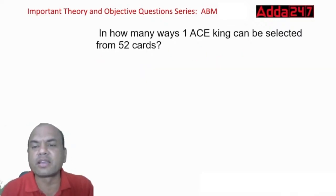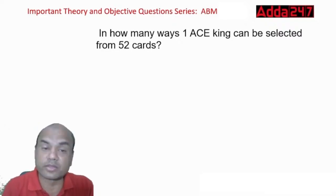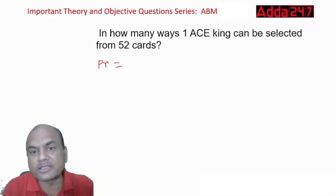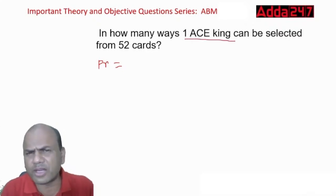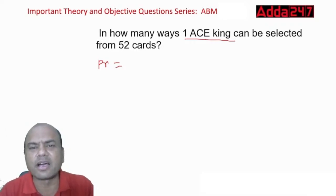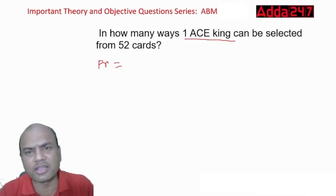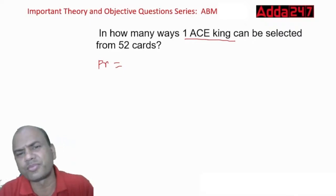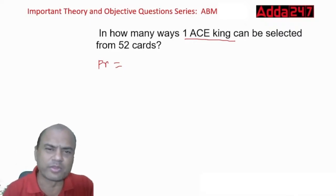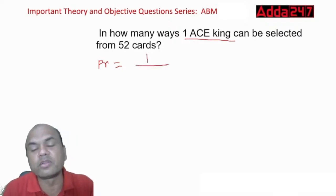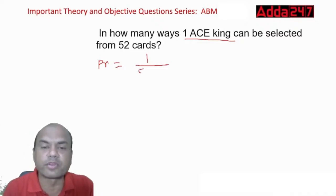In how many ways can one ace king be selected from 52 cards? There are four suits — ace, heart, diamond, and club (called Kilwar in Hindi). There is only one ace of king per suit, so there's only one ace king in the pack. Required is 1, total is 52 — so the answer is 1/52.